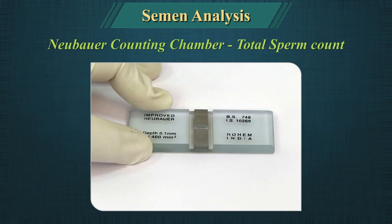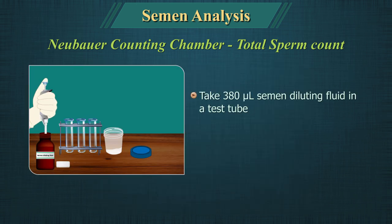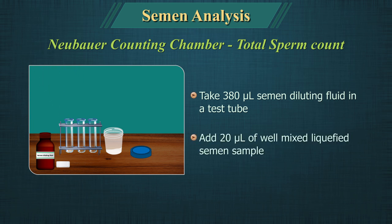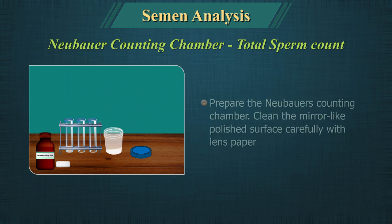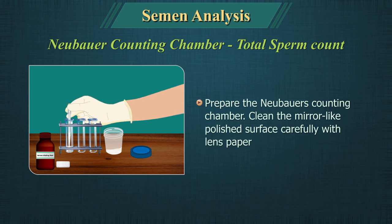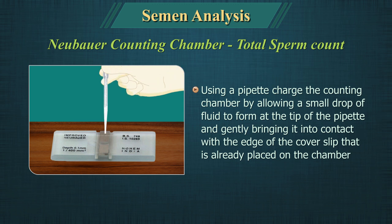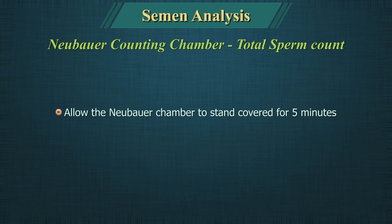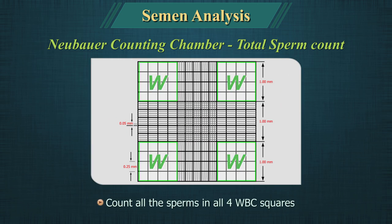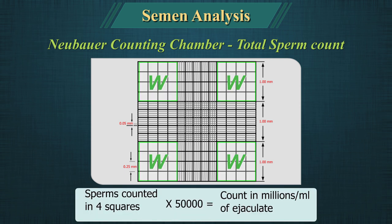Total sperm count using Nubar's counting chamber: Take 380 microliters of semen diluting fluid in a test tube and add 20 microliters of well-mixed liquefied semen to it. Prepare the Nubar's counting chamber by cleaning the surface carefully with lens paper; the cover slip should also be cleaned and placed over the counting surface prior to adding the cell suspension. Using a pipette, charge the counting chamber by allowing a small drop of fluid to form at the tip and gently bringing it into contact with the edge of the cover slip. Allow the chamber to stand covered for 5 minutes, then count all sperms in the 4 WBC squares. Sperms counted in 4 squares multiplied by 50,000 gives the count in millions per ml of ejaculate.